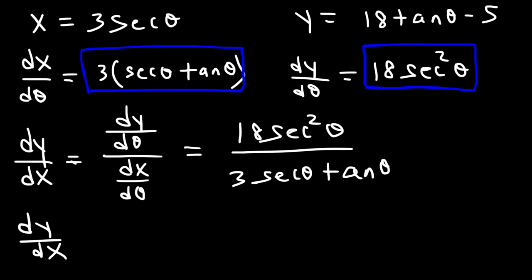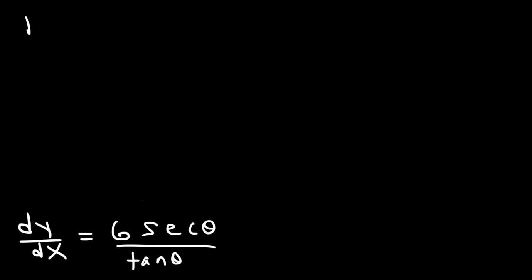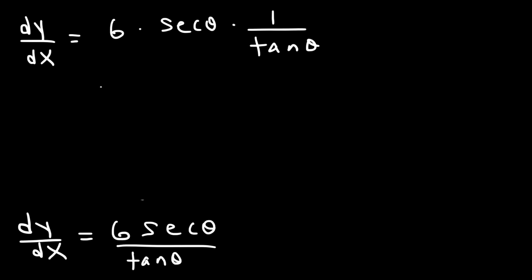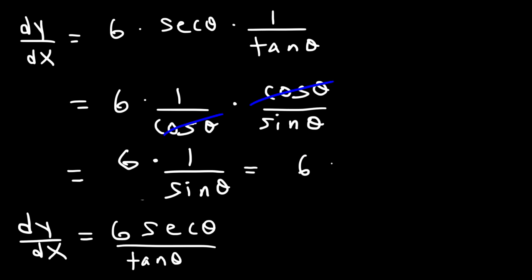So dy/dx equals 18 secant squared theta divided by 3 secant theta tangent theta. First, 18 divided by 3 is 6. Then we can cancel one secant, leaving secant on top and tangent on the bottom: 6 secant theta over tangent theta. Rewriting, secant is 1 over cosine, and 1 over tangent is cosine over sine, which is cotangent. After canceling cosine, we get 6 times 1 over sine theta, which is 6 cosecant theta.